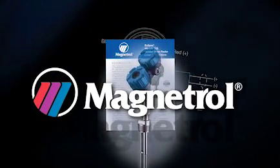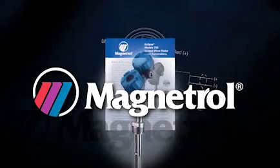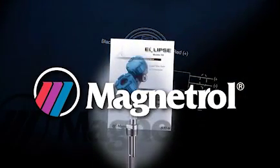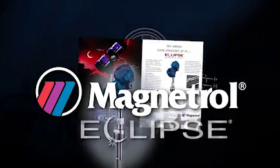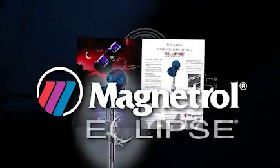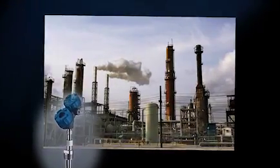But in 1998, Magnetrol changed the game with our Eclipse Model 705 transmitter. The 705 pioneered guided wave radar for loop-powered liquid-level measurement.